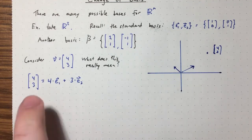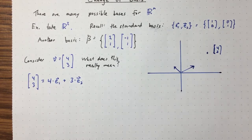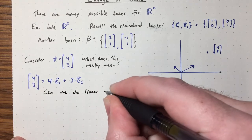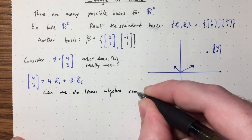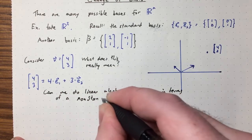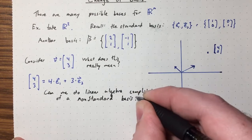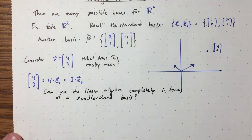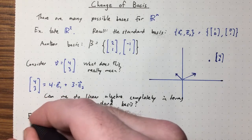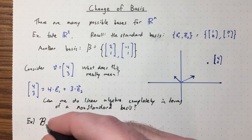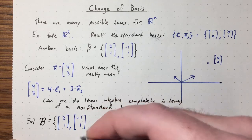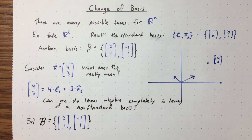So the question we're going to think about now is: can we do the same thing with a different basis? Can we do linear algebra — basically do everything — completely in terms of a non-standard basis? Let's try to do that using this basis B. You might think, well, why would we want to do that? It does make things more complicated, but we're going to see in the next lecture that there's a very good reason we might want to do that.